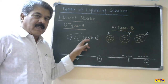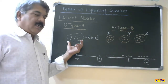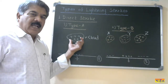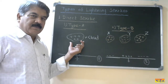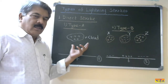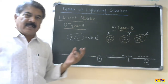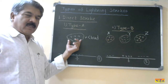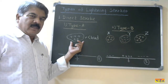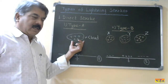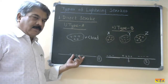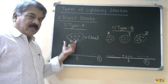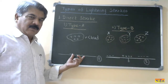In a Type A stroke there is a cloud. It can have positive charge or it can have negative charge. As per the theory of lightning mechanism discussed previously, when positive charges accumulate in the cloud, charges of opposite polarity accumulate on the ground below this cloud — so here it is positive charge, but on the ground it will be negative charge.